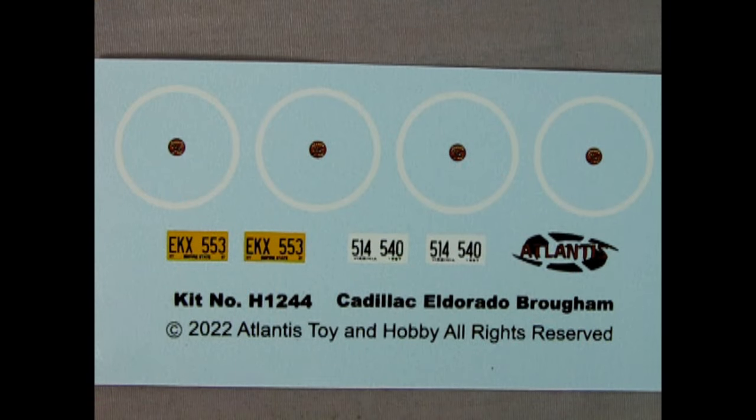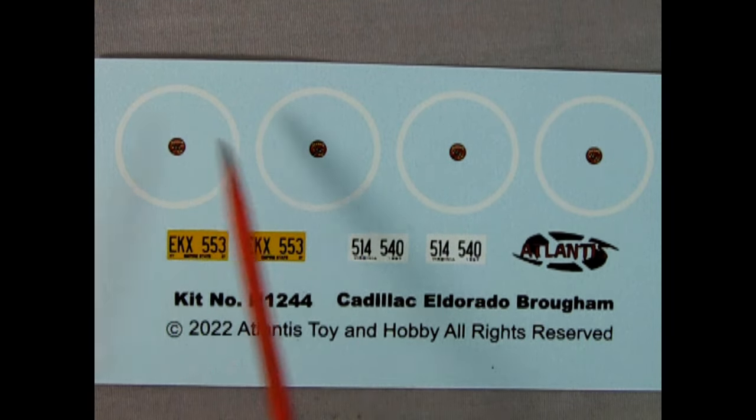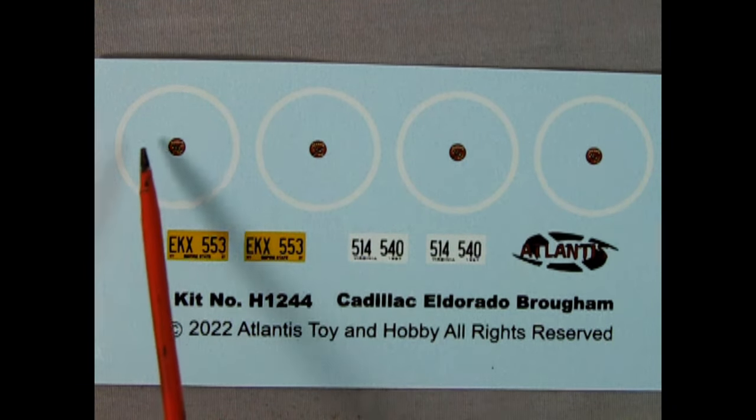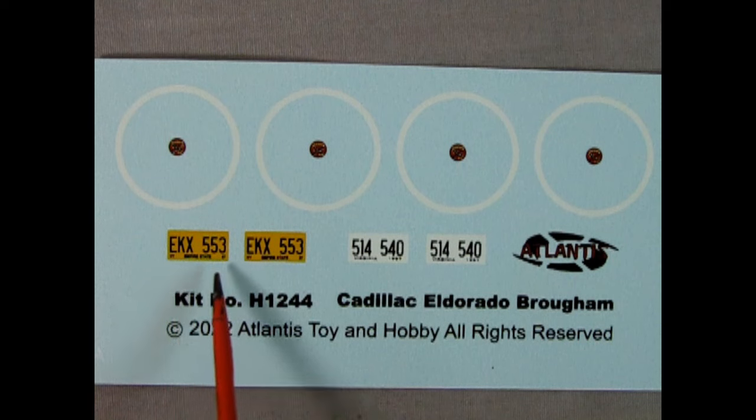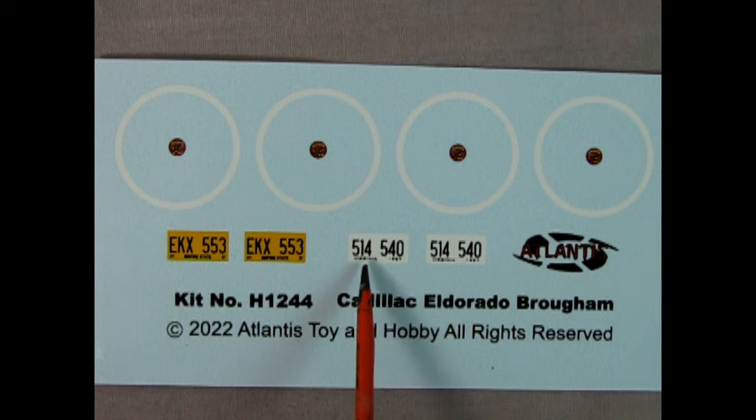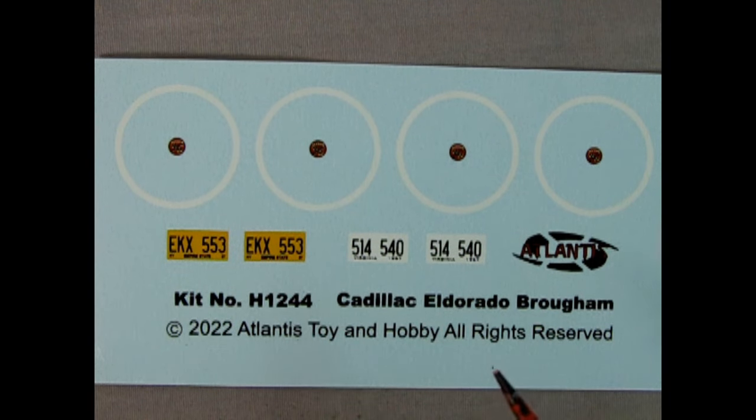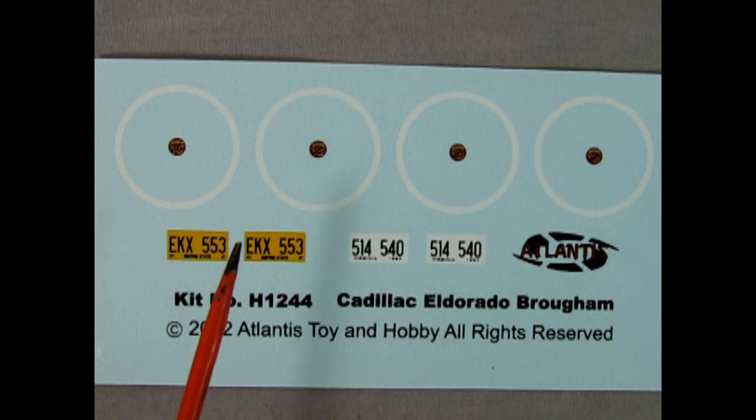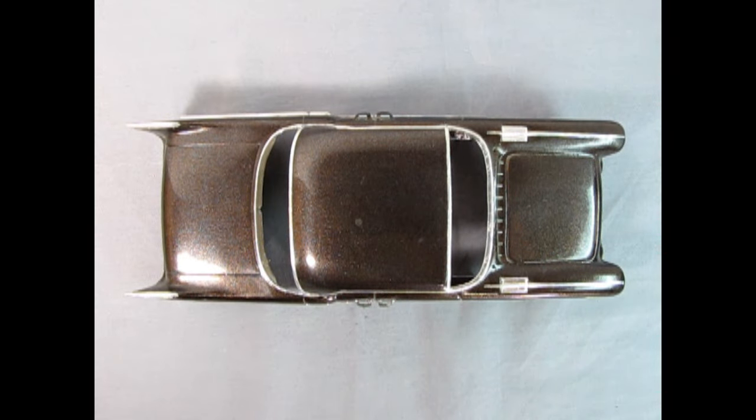Atlantis has included a really nice but very simplistic decal sheet in here which includes white wall tires and the Cadillac symbol for the center of the hubcaps as well as a New York State or actually Empire State license plate EKX 553 and a Virginia license plate 514540. These would actually be plates that they used back in 1957 so that's a nice touch. The only thing that I kind of wish they had put on here was Eldorado script for the sides of the car and the hood and the trunk lid and anywhere else that those scripts show up on the real vehicle.